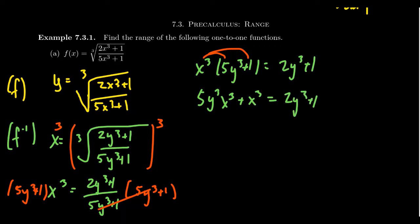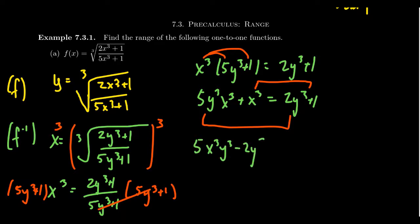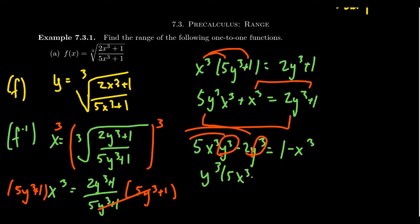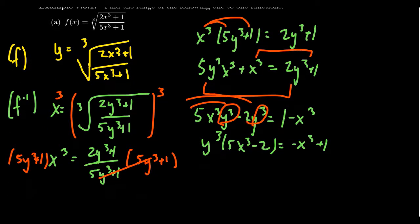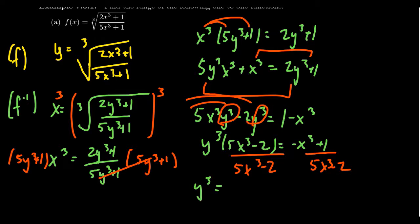Now combine the y³ terms: bring all y³ multiples to the left and everything else to the right. We get 5x³y³ − 2y³ = 1 − x³. Factor out y³ on the left: y³(5x³ − 2) = −x³ + 1. Dividing both sides by (5x³ − 2), we get y³ = (−x³ + 1) / (5x³ − 2).